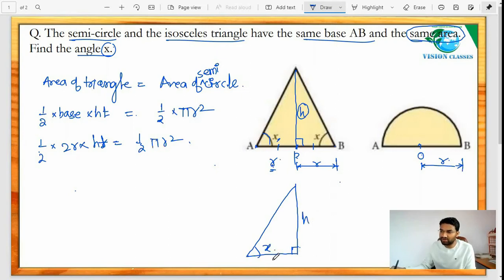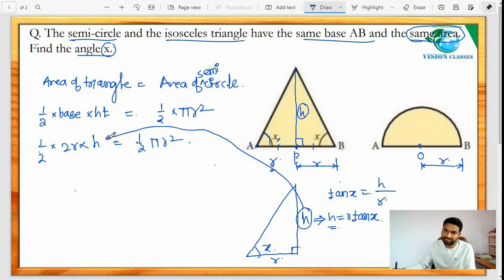So tan of the angle is equal to opposite side upon adjacent side, isn't it? So tan of x is equal to opposite side will be height over r. So we are getting height is equal to r times tan of x...